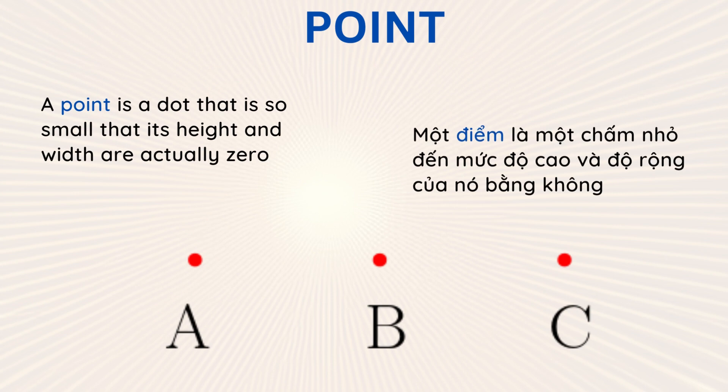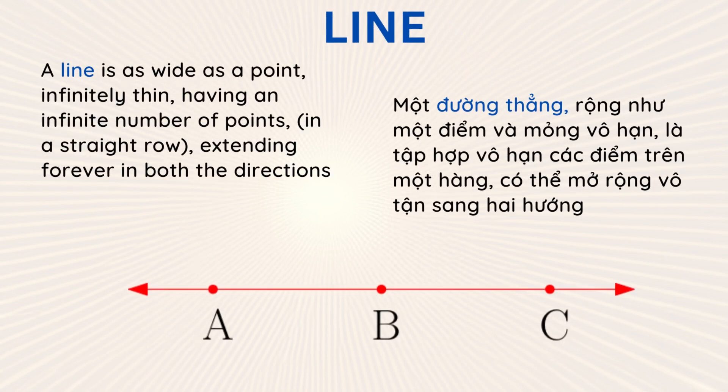A point is a dot that is so small that its height and width are actually zero. A line is as wide as a point, infinitely thin, having an infinite number of points in a straight row, extending forever in both directions.